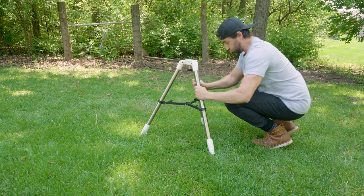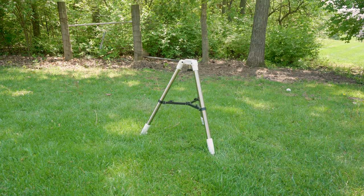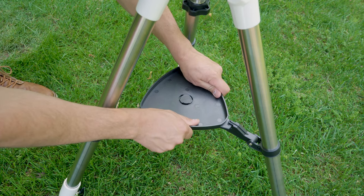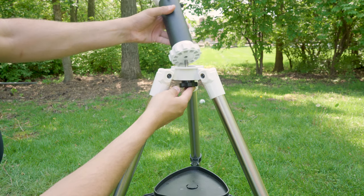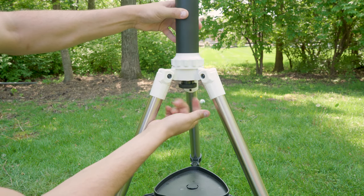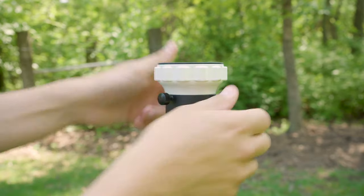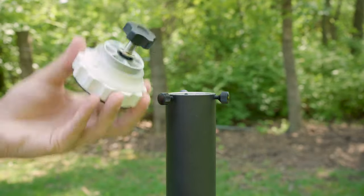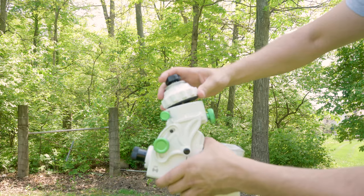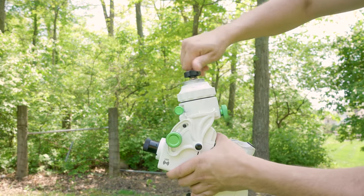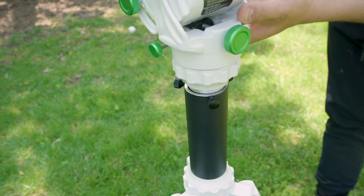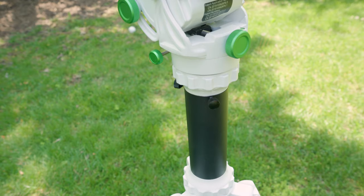First you want to open the tripod and put it on as level ground as possible and then attach the spreader bar. Next you want to screw in the bottom of the pier head to the top of the tripod head. Next you want to pull out the top of the pier head by loosening the three bolts and then you want to attach the pier head to the bottom of the mount head. From there you can put the mount head back into the top of the pier and tighten it back down.